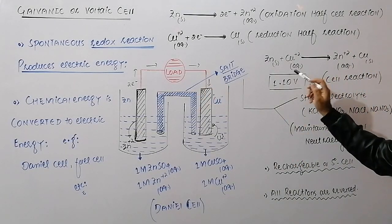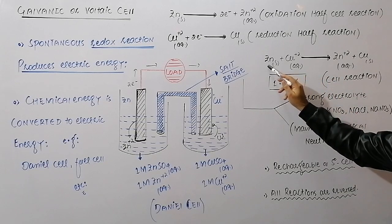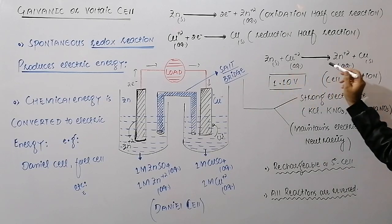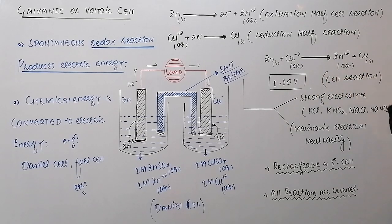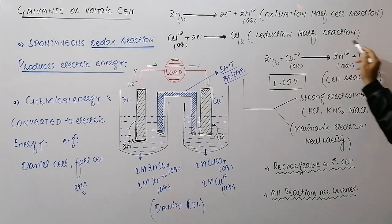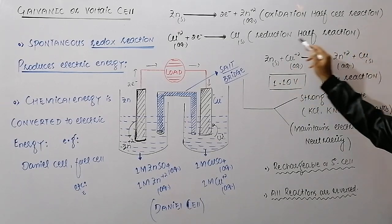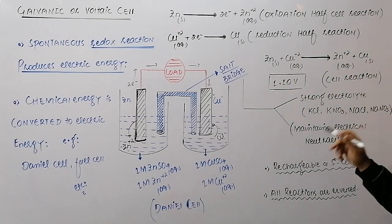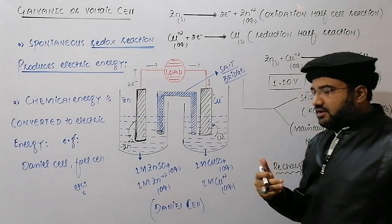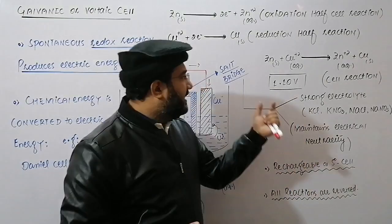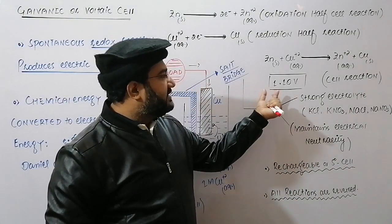The overall cell reaction is one in which zinc is being oxidized and copper ions are being reduced. This is the spontaneous redox reaction at the cost of which electric energy is produced. The EMF or cell potential of the Daniel cell is 1.10 volts.